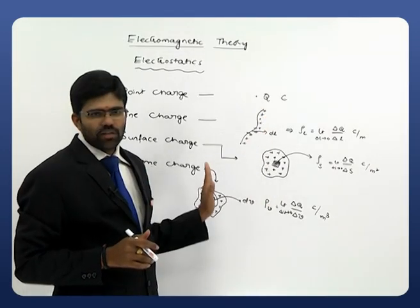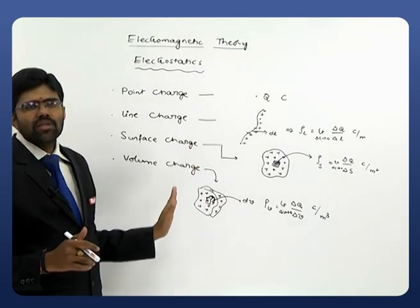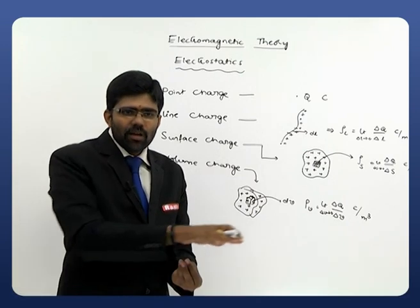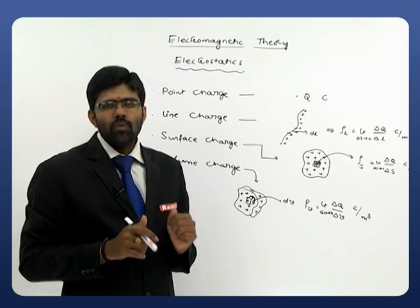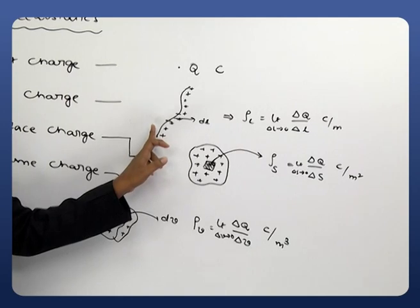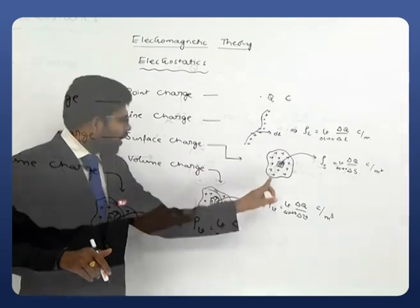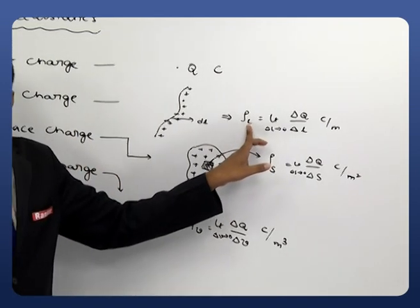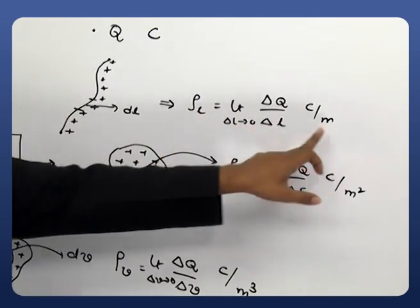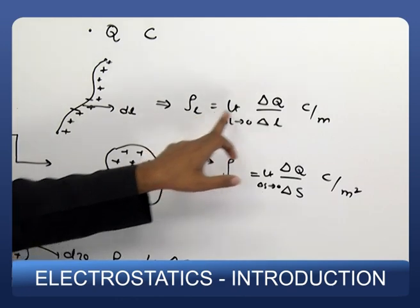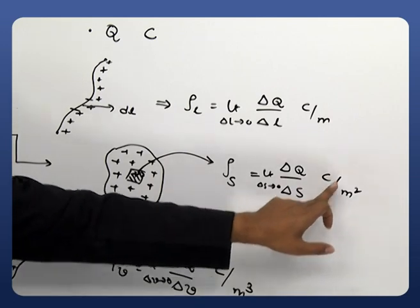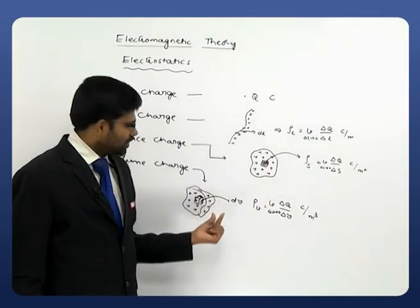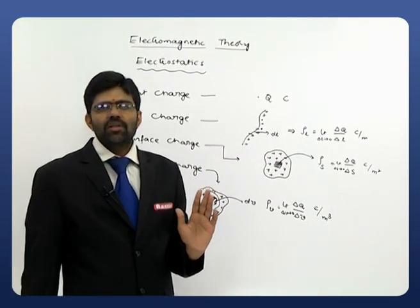In practical cases, we always come across these four types of charges. A charge may be a point charge for analysis purposes, or practically it may be along a line, on a surface, or within a particular volume. Now, how to obtain the total charge when we have these charge densities? Whenever we have densities, if you multiply density with the corresponding quantity in the denominator, you will get the total charge. Line charge density multiplied with length gives total charge. Surface charge density multiplied with area gives total charge. Volume charge density multiplied with volume gives total charge. Since we are considering differential elements, we need to take the integration of those differential elements.